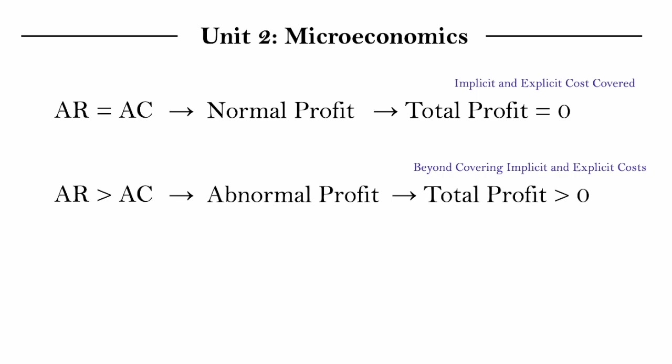And lastly, we have when AC is greater than AR, we are incurring a loss, total profit is less than zero, and a firm has failed to cover their implicit and or explicit costs.